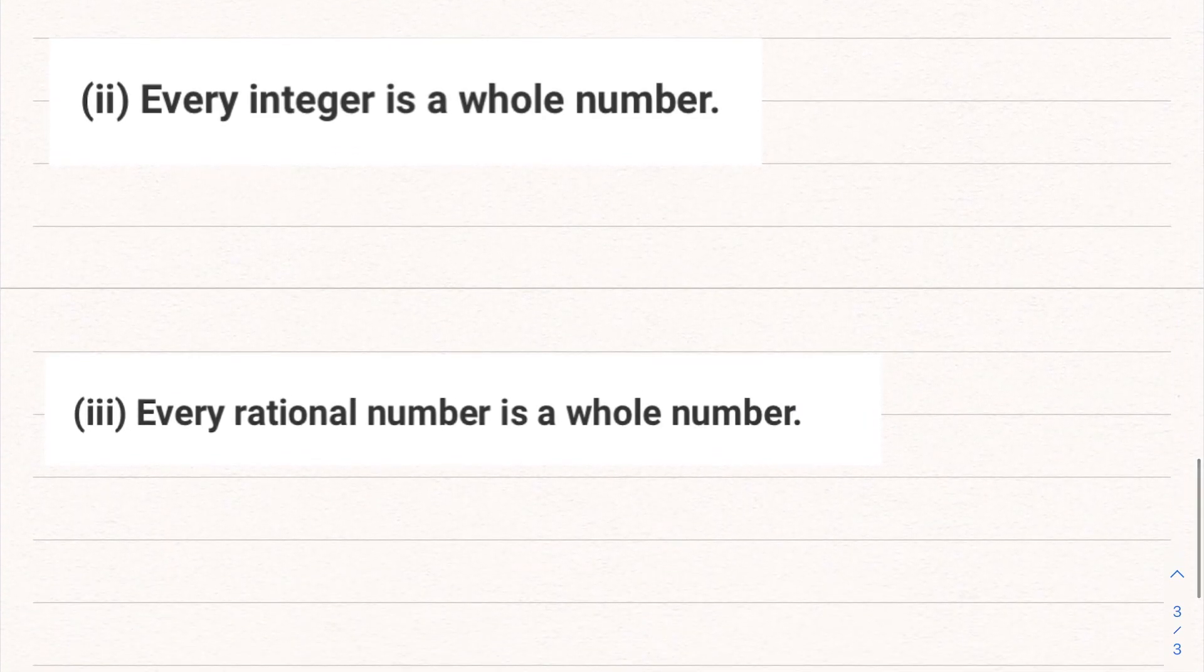Second part: Every integer is a whole number. Now let's talk about integers. Integers are positive numbers, negative numbers, and 0. These all are integers. That means ..., -3, -2, -1, 0, 1, 2, 3, ... These all are integers.